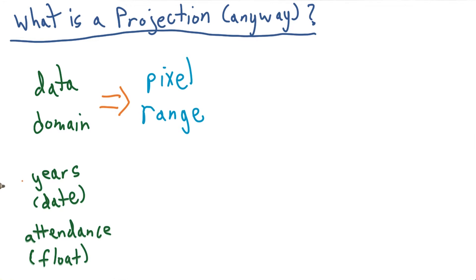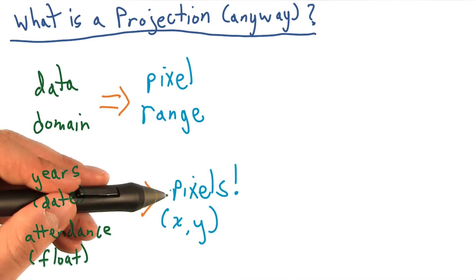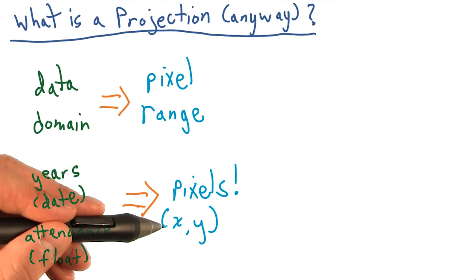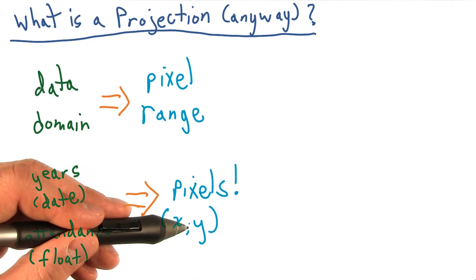In the scatter plot, we went from years, represented as a date, and attendance, represented as floats, to pixel values, or rather x-coordinate and y-coordinate on our chart.